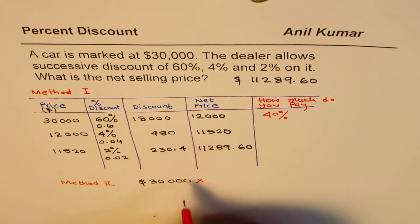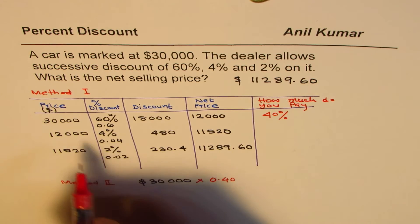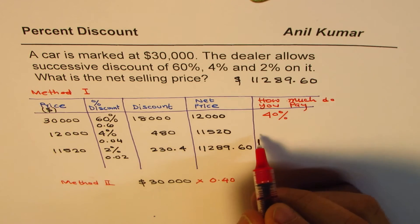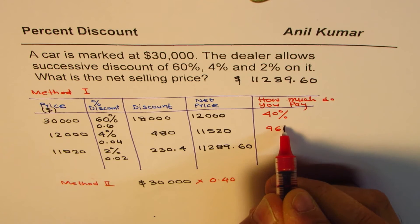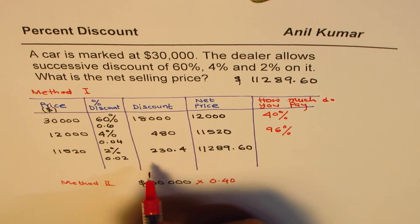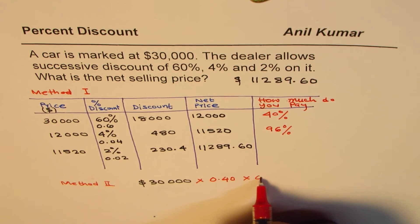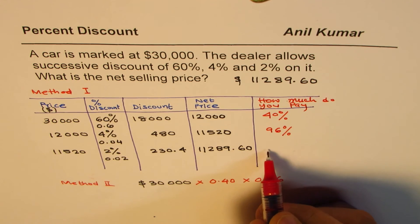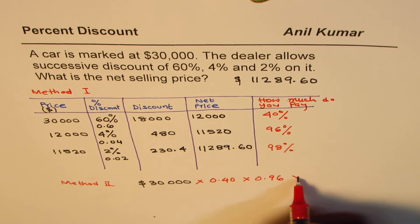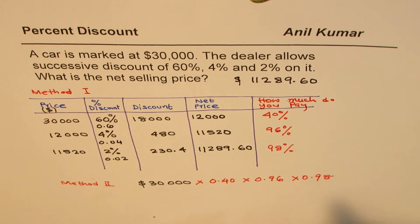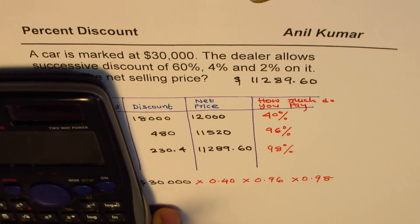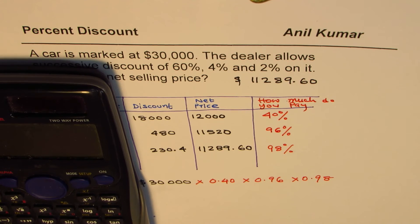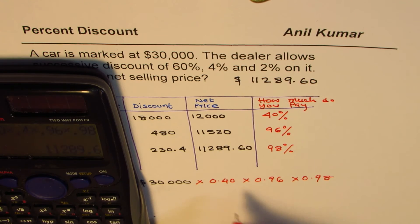There is a discount of 60%, so you pay 40% of this amount. You multiply this by what you want to pay, which is 0.40. Then we have a discount of 4%, so how much do you pay? You pay 96% of this, because 4% is discount. So you multiply that by 0.96. Then you have a discount of 2%, so you pay 98%, slightly less. That means times 0.98. When you multiply all this, what do you get? Let us see.